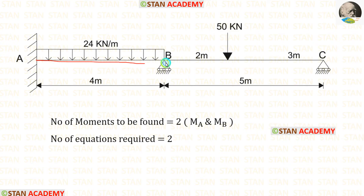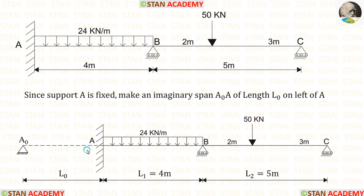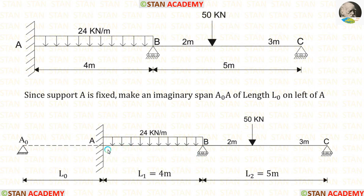Using spans AB and BC, we can make one equation. But we need two. So we have to make an imaginary span. The imaginary span should be made at the fixed support, so on the left of A we make the imaginary span A0A of length L0. Using spans A0A and AB, we can make the first equation, and using spans AB and BC, we can make the second equation.